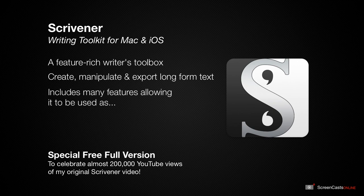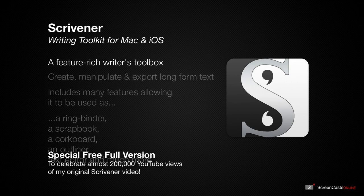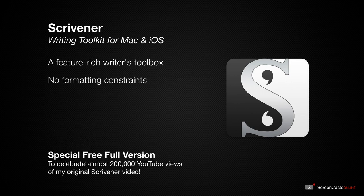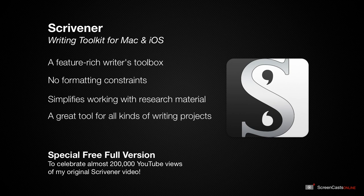It's sort of a combination of a ring binder, a scrapbook, a corkboard, an outliner, text editor, and more. It allows you to work on your text without the constraints of formatting or layout, and gives you the ability to bring in research material into your Scrivener file itself, or review while you're actually working on your text. Many people have used Scrivener to write novels, plays, scripts, articles, training materials, and many other types of long-form text, but it's equally useful for working on short text extracts.